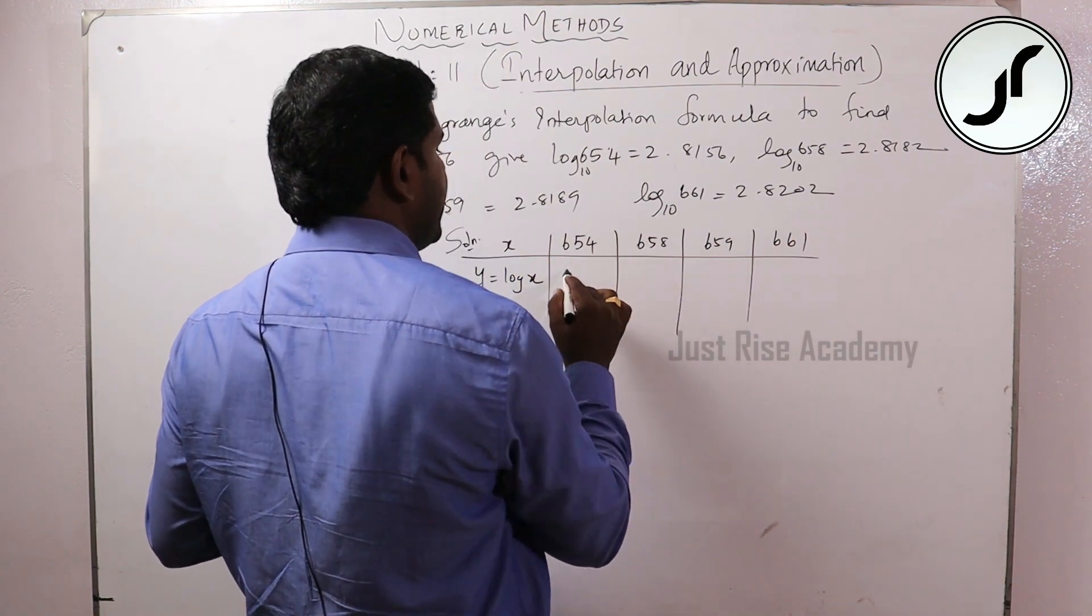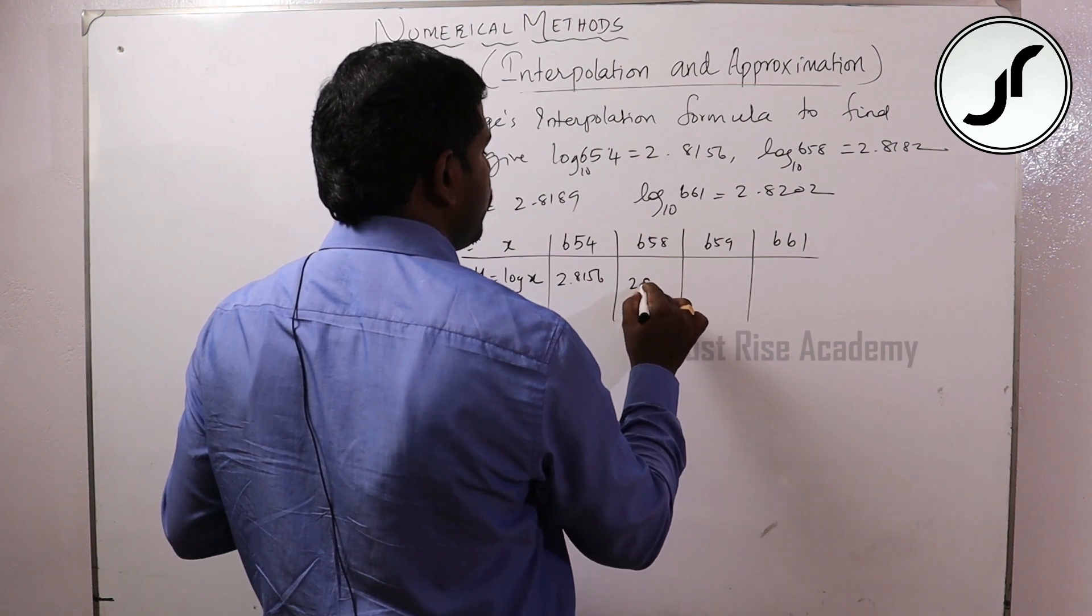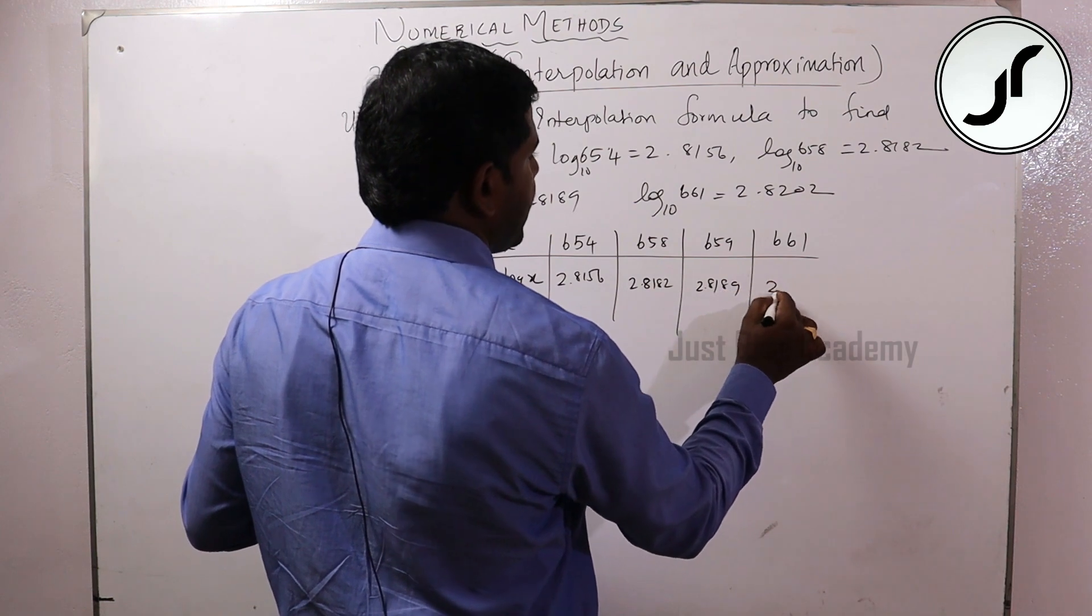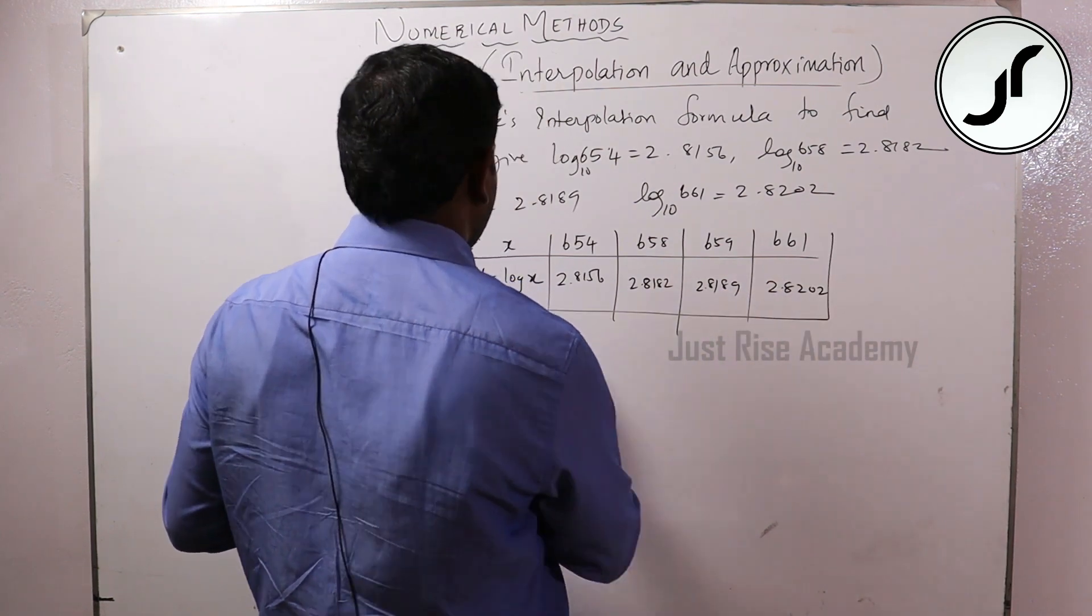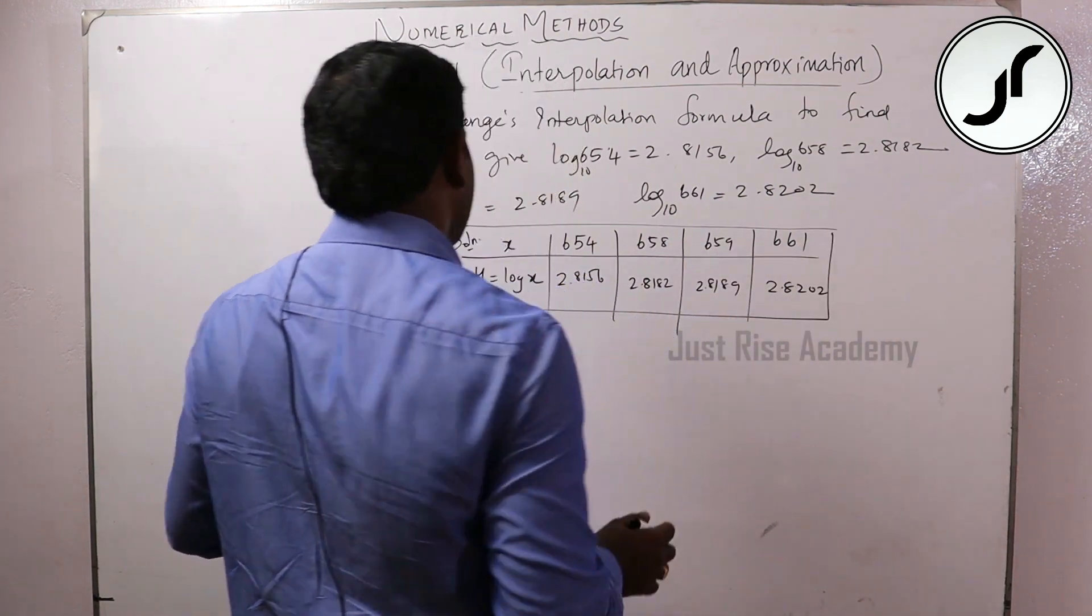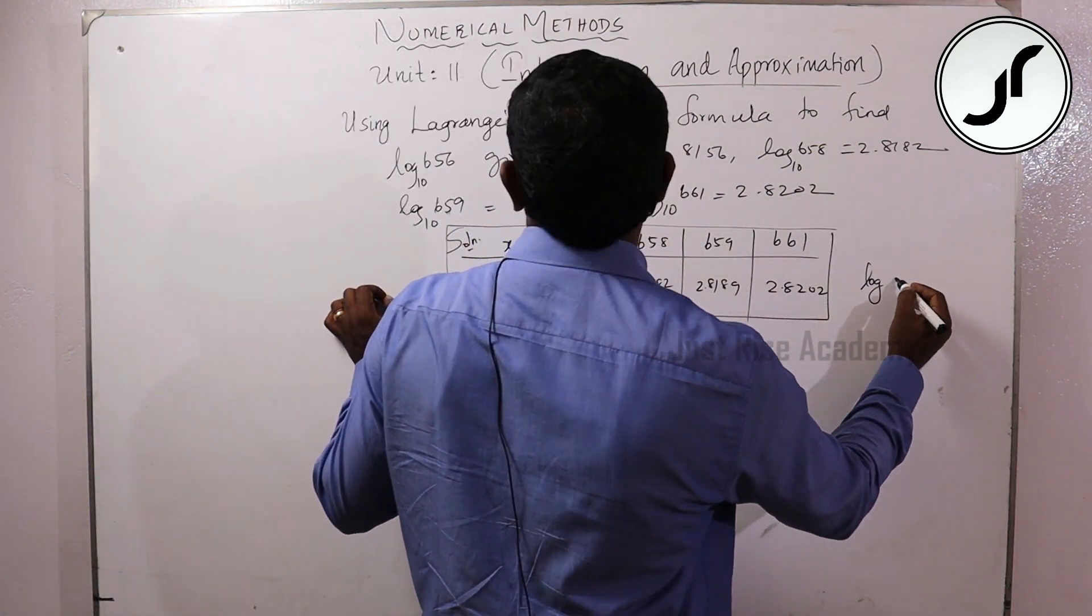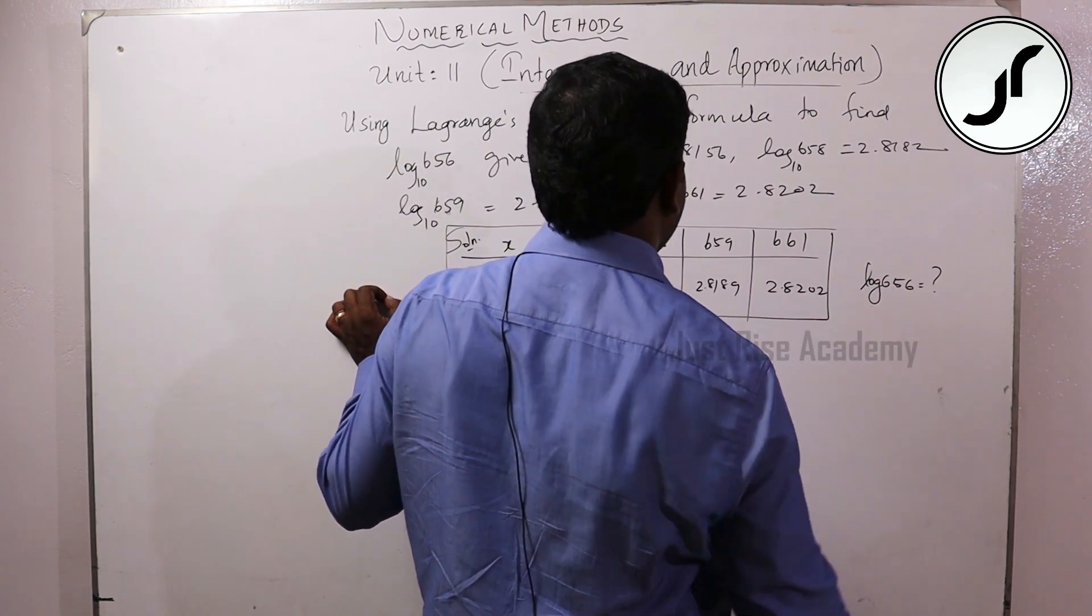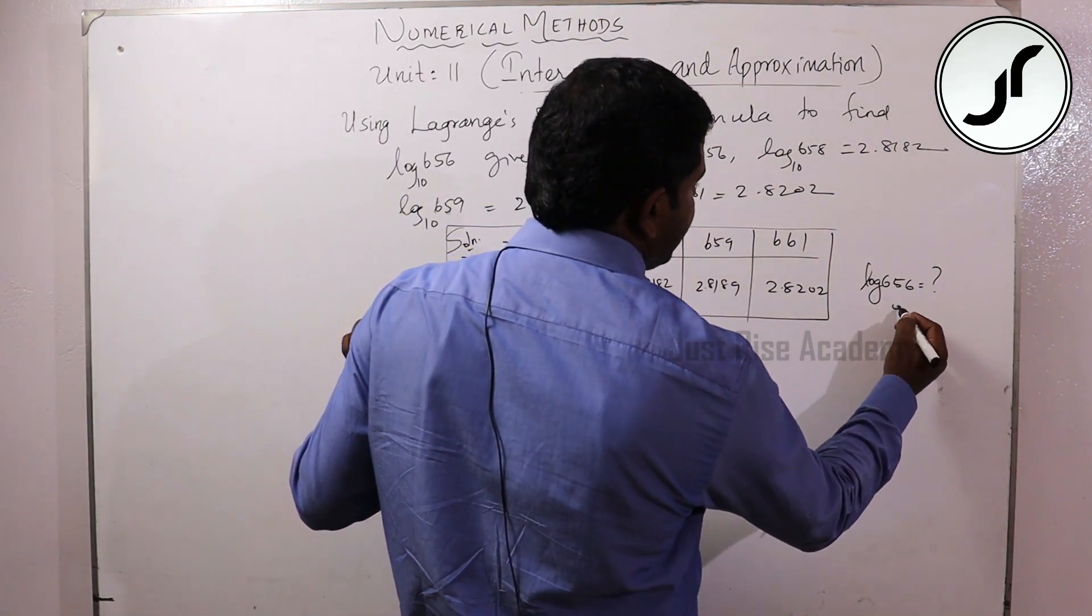So 2.8156, 2.8182, 2.8189, 2.8202. This is x and y. To find log of n of d, 56 is equal to what. That is, to find y of 656.